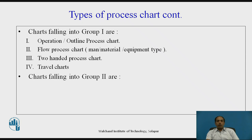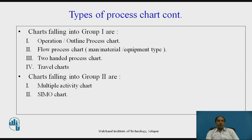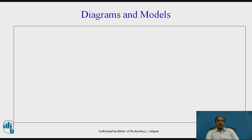Charts requiring a time scale include the multiple activity chart, which is the most versatile and important. It combines man-machine activities on a time scale to find out utilization of the person or machine, identify idleness, and schedule machines to minimize idle time. The SIMO chart — short for simultaneous motion chart — focuses on motion economy, finding out motions along with the time scale of a particular job.